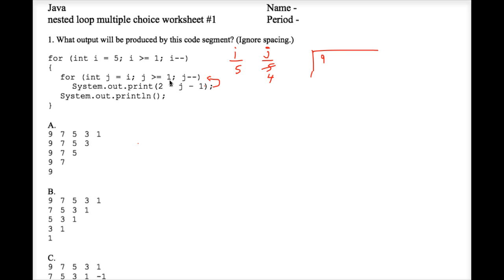Since this is print and not println, whatever we print here will be on the same line as the nine. Two times j minus one is currently seven, so seven prints. We loop back up, j minus minus, j is still greater than or equal to one. Two times three is six minus one is five, so five prints.